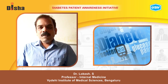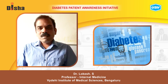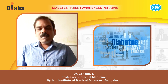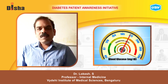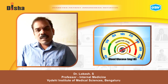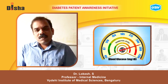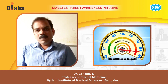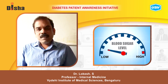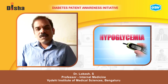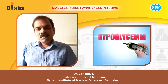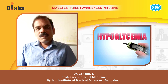Now I'll be talking about diabetic emergencies. Insulin is the main modality of treatment in diabetes. Excess insulin can cause low blood sugars leading to insulin shock, while insufficient insulin causes high blood sugars leading to diabetic coma. So how do we identify whether sugars have gone too low or too high?